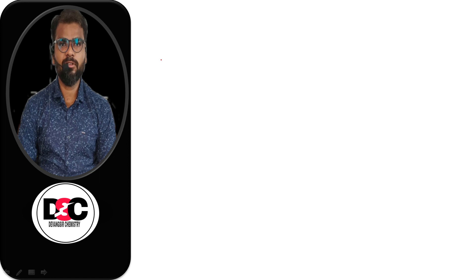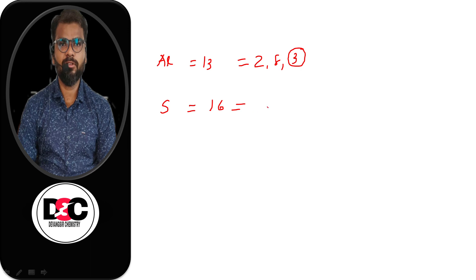Second pair: Aluminum and Sulfur. Aluminum belongs to Group 13 with a valency of 3 — it has 3 electrons in its outer orbit. Sulfur belongs to Group 16 with a valency of 2. Writing Aluminum with valency 3 below and Sulfur with valency 2 below, then cross-multiplying, the compound formed is Al₂S₃.